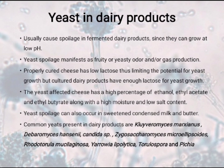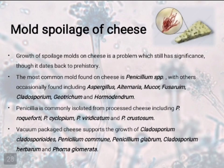Yeast spoilage can also occur in sweetened condensed milk and butter. Mold spoilage of cheese: growth of spoilage mold on cheese is a problem which still has significance though it dates back to prehistory. They grow on the surface in large numbers and are visible as fluffy growth. The most common mold found on cheese is Penicillium species, with other species occasionally found including Aspergillus, Alternaria, Mucor, Fusarium, etc. Penicillia are commonly isolated from processed cheese. Vacuum-packaged cheese supports the growth of Cladosporium cladosporioides and Penicillium species.